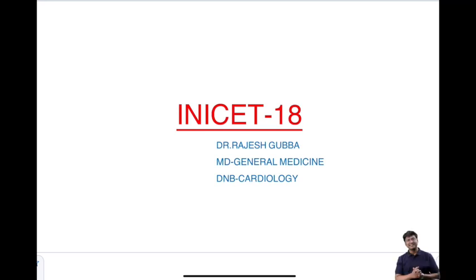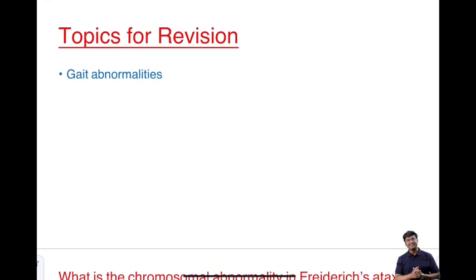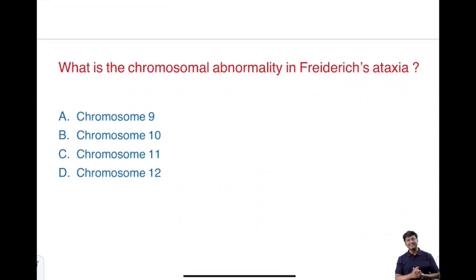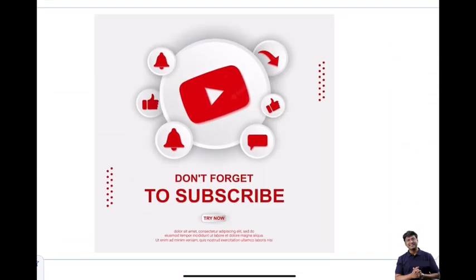Hello everyone, I am Dr. Rajesh Gubba, general medicine educator. As part of the INI-CT series, today's topic for revision will be gait abnormalities. Before going ahead, please answer this question in the comment section: what is the chromosomal abnormality in Friedreich's ataxia — chromosome 9, 10, 11, or 12? Also, if you haven't subscribed to this channel, please subscribe and press the bell button.